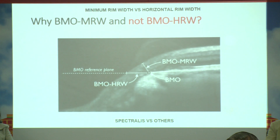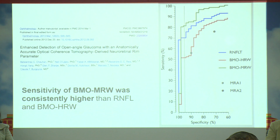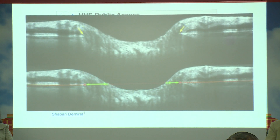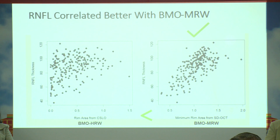Every decision comes at a trade-off. When we go to BMO-MRW, we have to understand why we can't use BMO horizontal rim width. As shown in the figure, the horizontal rim width and the minimum rim width are different. Many studies now show that BMO-MRW yields higher diagnostic performance than the Bruch's membrane opening horizontal rim width. The sensitivity of BMO minimum rim width correlates very consistently with retinal nerve fiber layer defects, and visual field correlations are also better with BMO-MRW compared to horizontal rim width.